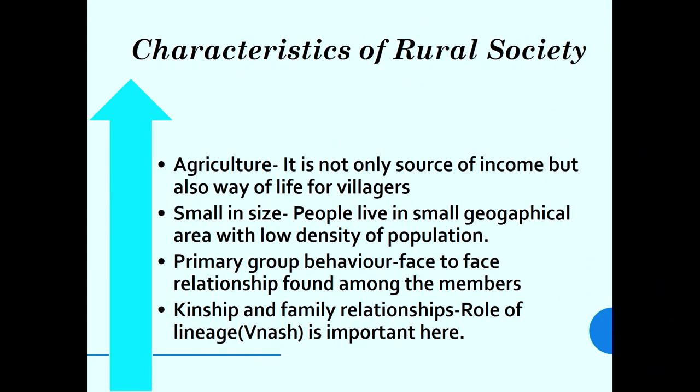When we talk about rural society, it means a society that lives in villages and depends on the natural environment. These societies have a low density population, intimate group relationships, oral traditions, and are rich in culture and tradition. Being dependent on the natural environment means they are more dependent on agriculture — it is not only a source of income but also a way of life for villagers.